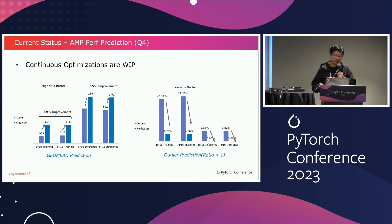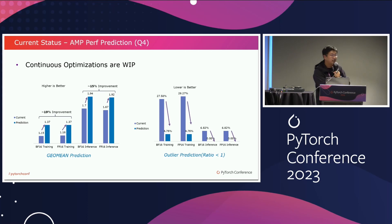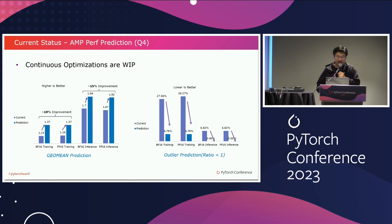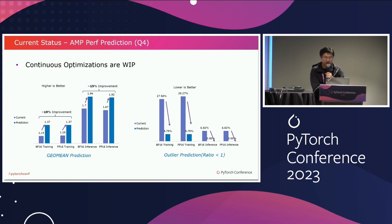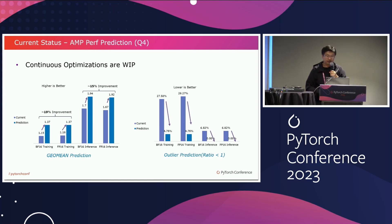We will deliver significant performance improvement this quarter. For training, we could get about an additional 19% performance improvement conservatively, and for inference, about 15% performance improvement. In terms of outlier models, training outliers will decrease from 24% to 4%, and for inference, outlier models will be zero — meaning no outlier models for inference.